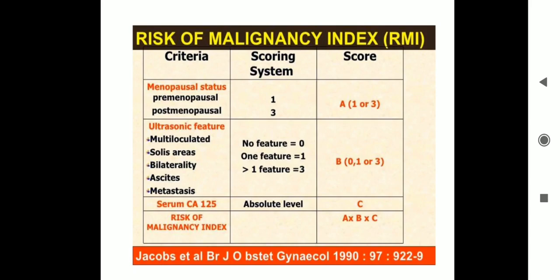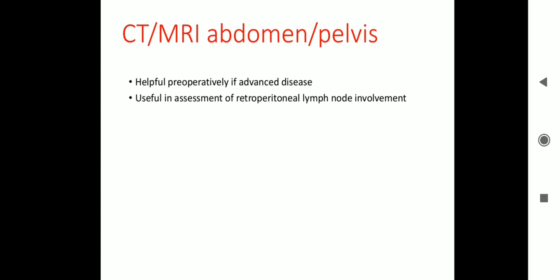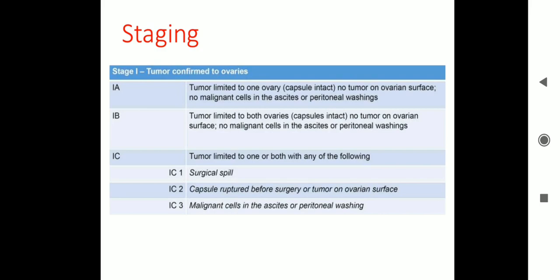CT or MRI of the abdomen and pelvis is helpful pre-operatively to know if the disease is advanced, and is useful in assessment of retroperitoneal lymph node involvement.